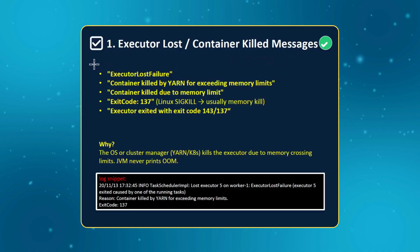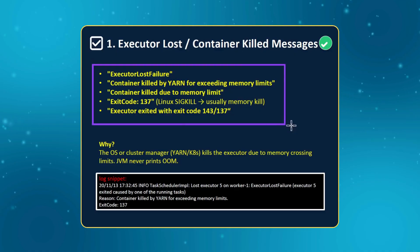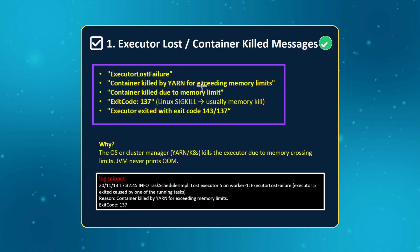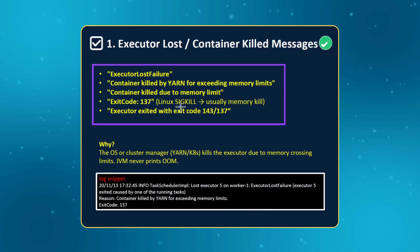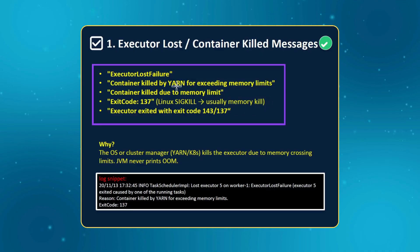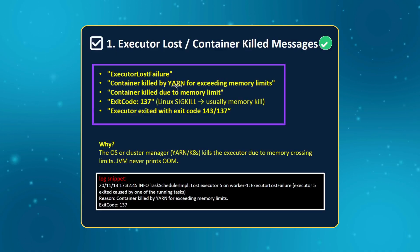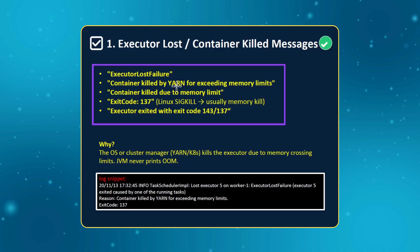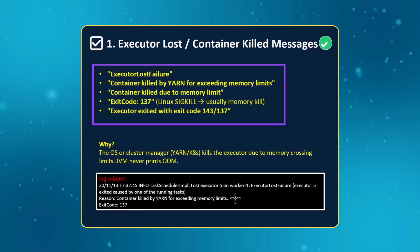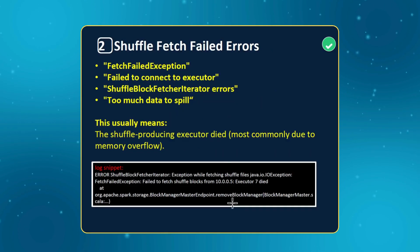The very first one is executor lost or container killed messages. If you see any of these errors in your log files, they are indirectly related to out of memory — things like 'executor lost', 'container killed by YARN', 'container killed due to memory limits', exit code 137 or 143, SIGKILL, or coarse-grained errors. These occur because the operating system or cluster manager kills the executor due to memory limits. If you find something like this in your logs, it is related to out of memory.